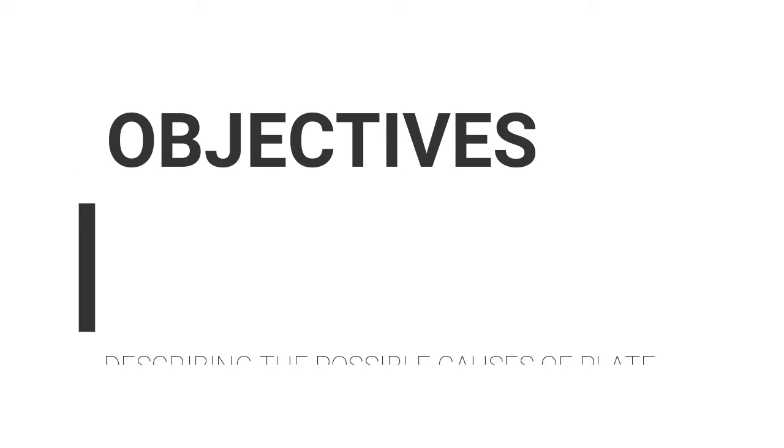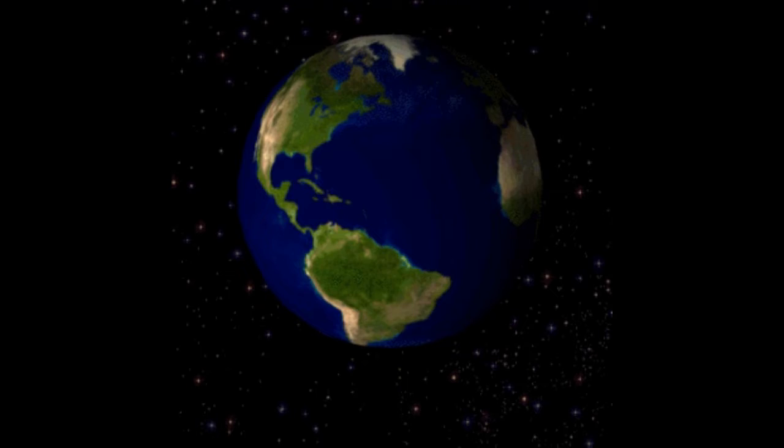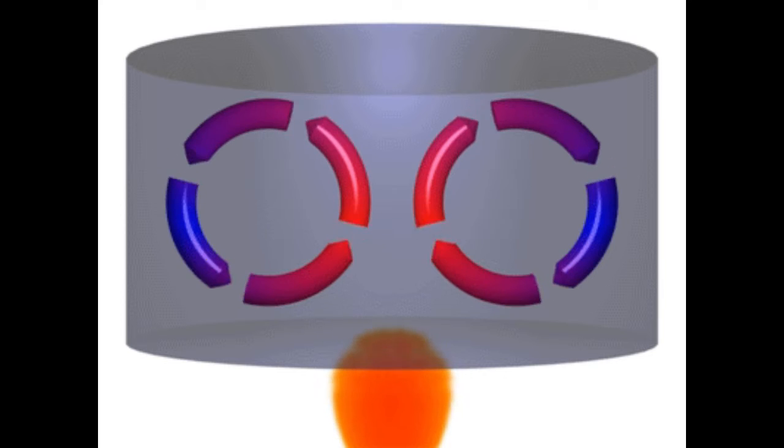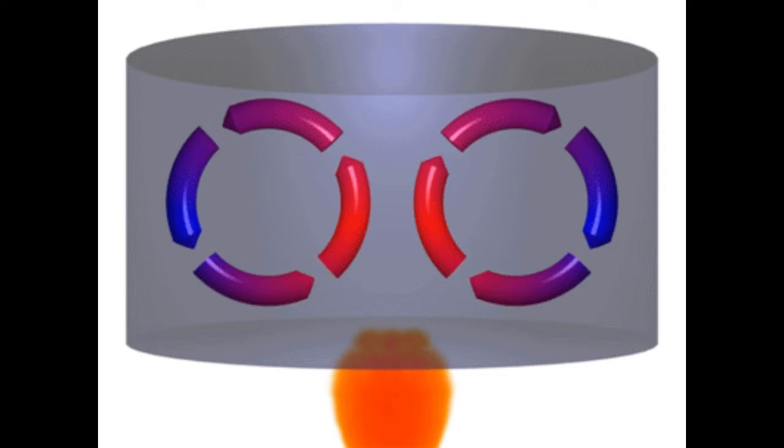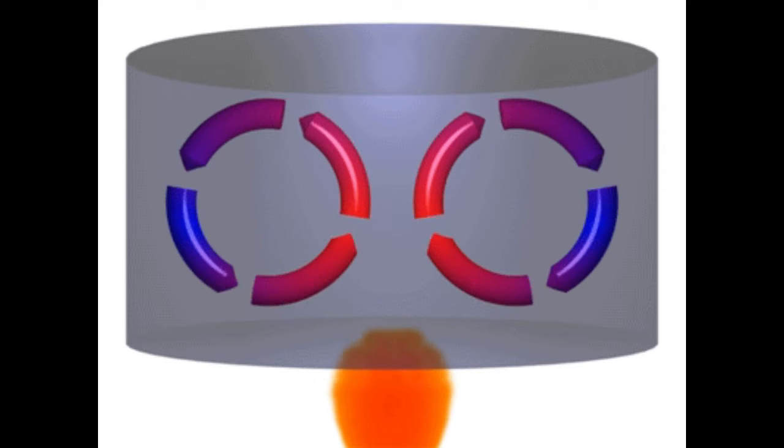Today's objectives include describing the possible causes of plate movement and recognizing the process of convection current in the mantle. For sure, when you were in Grade 7, you have encountered the terms convection current. It is actually one of the methods of heat transfer along with conduction and radiation. Convection is the process by which heat is transferred by movement of a heated fluid such as air or water.